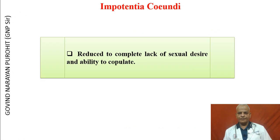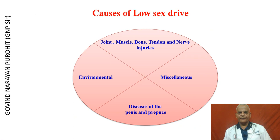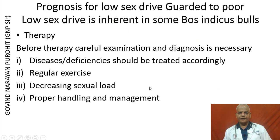Impotentia coendi refers to reduced to complete lack of sexual desire and ability to copulate. The causes of low sex desire are multifarious and can be because of joint, muscle, bone, tendon and nerve injuries, environmental factors, diseases of the penis and prepuce, and miscellaneous causes. The prognosis for low sex drive is guarded to poor, and low sex drive is inherent in some Bos indicus bulls.